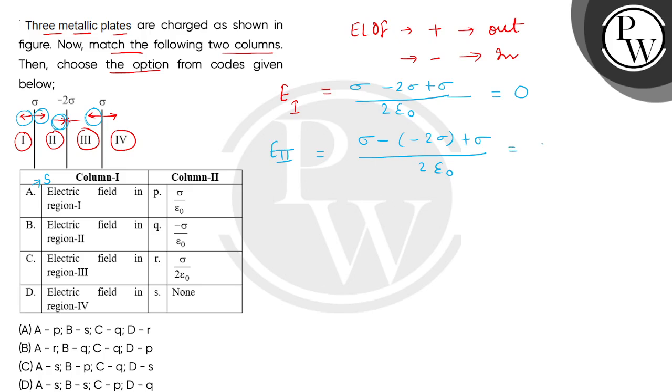So children, this answer will be sigma divided by epsilon 0. So we will get the answer of B entry.